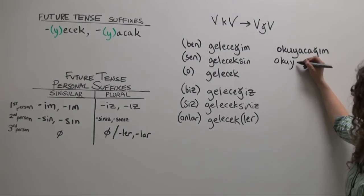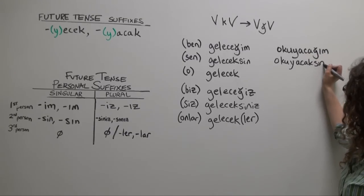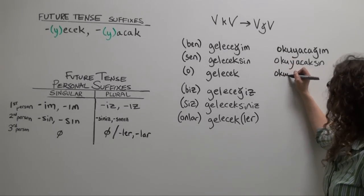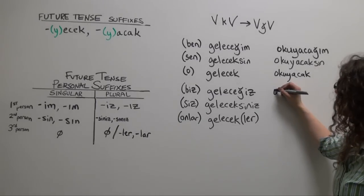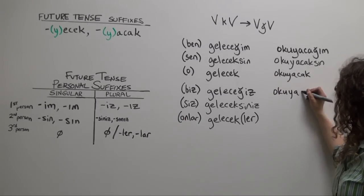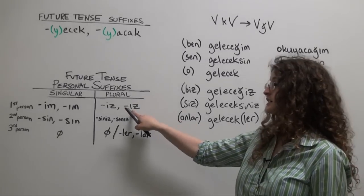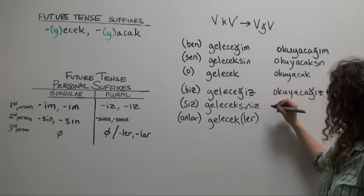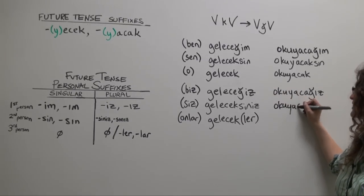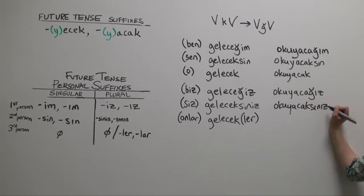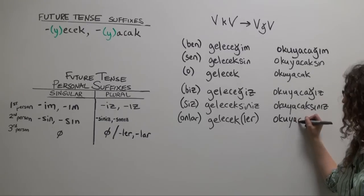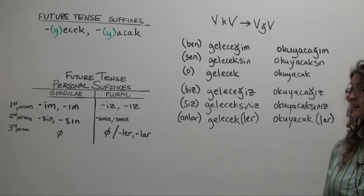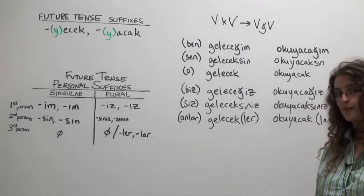buffer y, acak sın. Okuyacaksın. You will read. O okuyacak. Biz oku ya ca, ğız, consonant alternation. Okuyacağız. We will read. Siz okuyacak sınız. And finally, onlar okuyacak, with an optional lar, okuyacaklar, if we desire to add that plural suffix according to the rules of two-way vowel harmony.